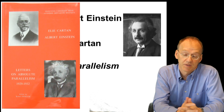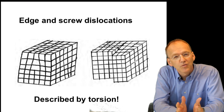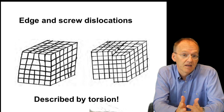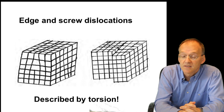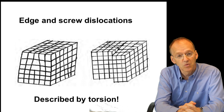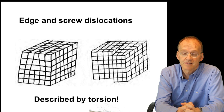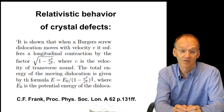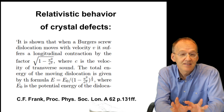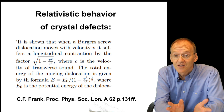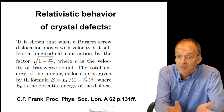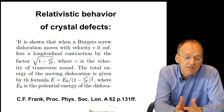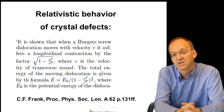What struck me — and this is a little-known fact — is that this concept of torsion, discussed by Einstein and Cartan in the late 1920s, is the appropriate mathematical tool to describe defects in crystals, whose motion is described by the exact same equation as a relativistic electron. This is mind-blowing, but as a bad joke of history, it was discovered twenty years after Einstein's attempts were deemed a failure.